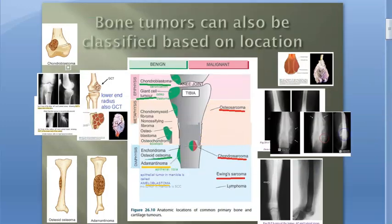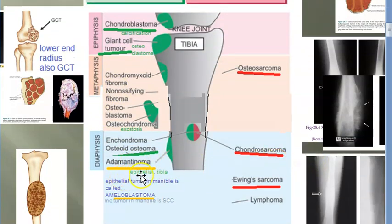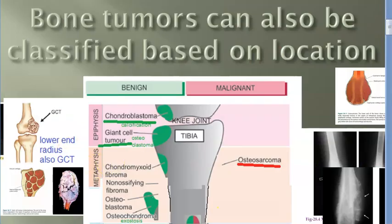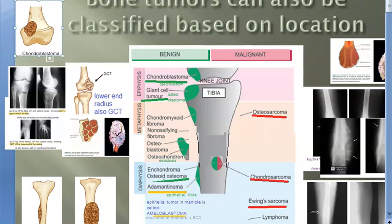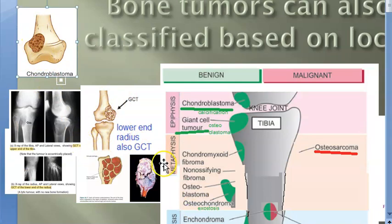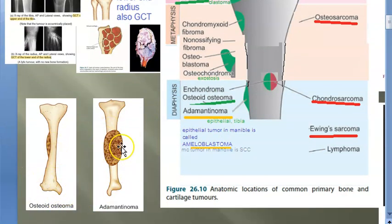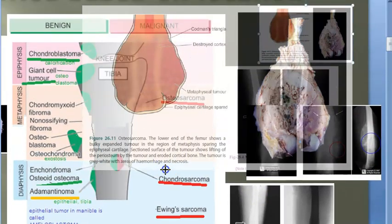To recap the location-based classification: epiphyseal tumors include chondroblastoma and giant cell tumor (osteoclastoma); metaphyseal tumors include osteochondroma and osteosarcoma; diaphyseal tumors include osteoid osteoma, adamantinoma, chondrosarcoma, Ewing's sarcoma, and lymphoma. Looking at the images: chondroblastoma and giant cell tumor both affect the epiphysis; osteoid osteoma and adamantinoma show in the diaphysis.